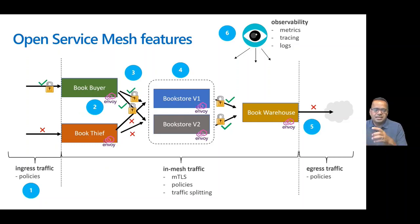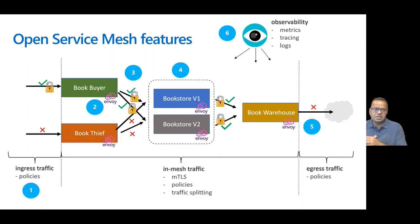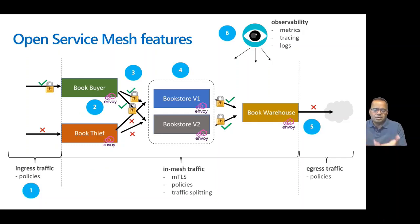Point three in the OSM features is service-to-service level access control — allowing the book buyer to talk to bookstore but not the book thief. Point four is traffic splitting: if you have two versions of the bookstore service, you can do progressive delivery and switch from bookstore v1 to v2 using the methods we discussed. Point five is egress control — you can control who is allowed to communicate outbound. Point six covers observability capabilities: tracking metrics, tracing service-to-service communication, and accessing logs.